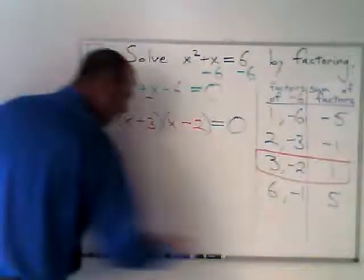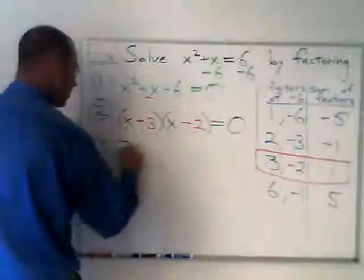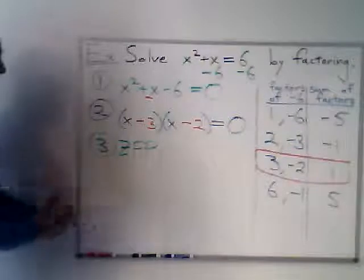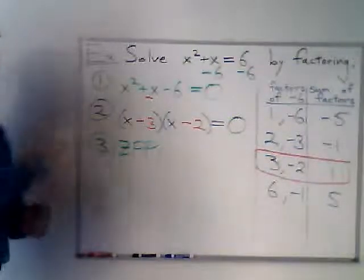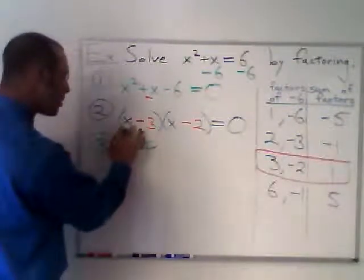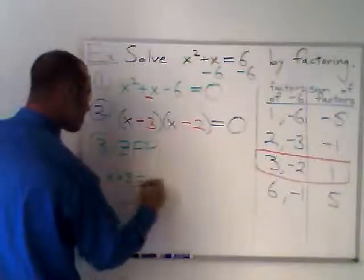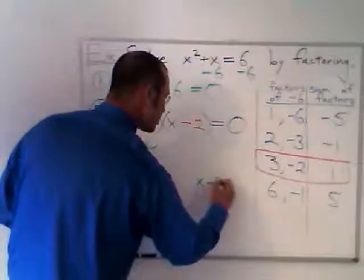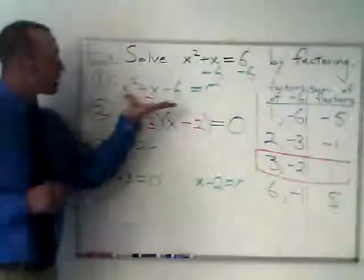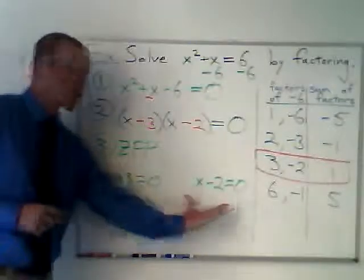Brings me to the next step, where I use the zero factor property. Now, when you're doing this, you don't have to tell me that you're using the zero factor property. It's useful to know what it is. It's most important to know how to use it. And that is to say, well, this times this equals zero means either X plus three is equal to zero or X minus two is equal to zero.